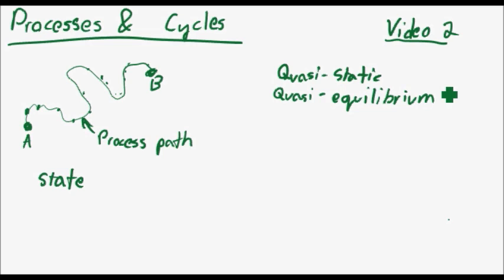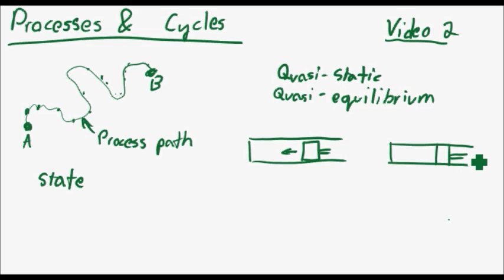A quasi-equilibrium system is, say you have a piston and you're using this piston to compress air in a chamber. And there's two ways you can do it, right? So you can do it really fast or you can do it really slow.